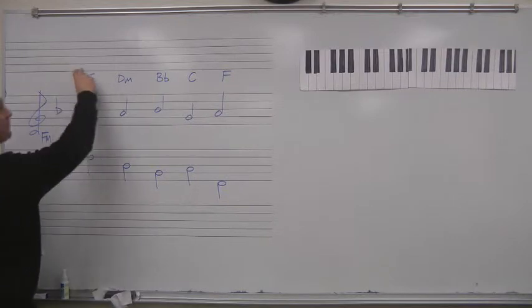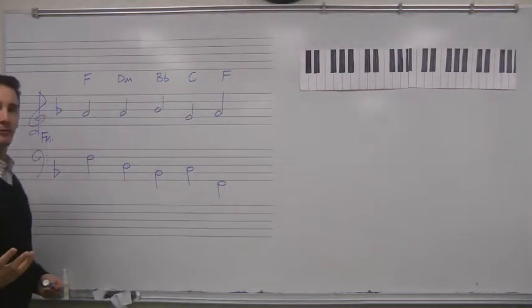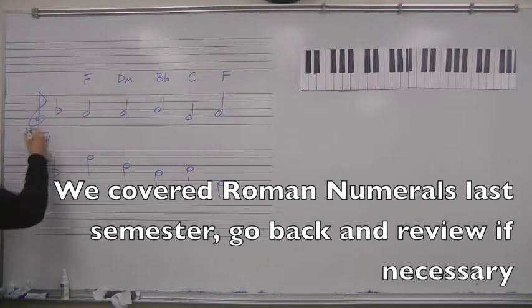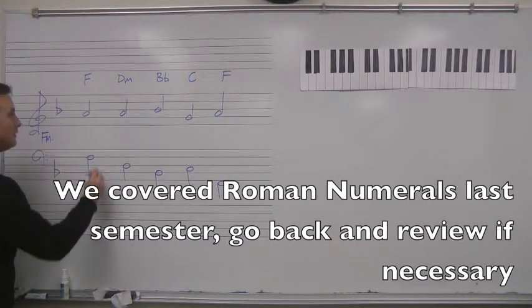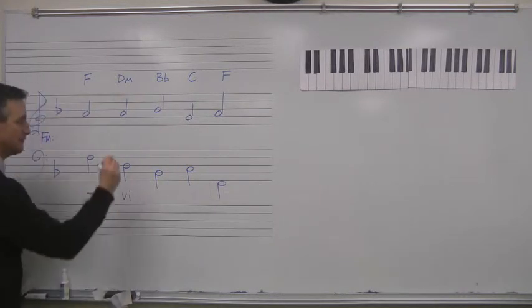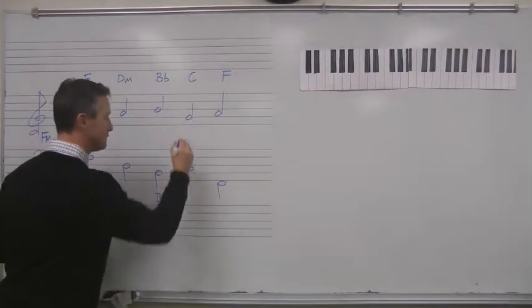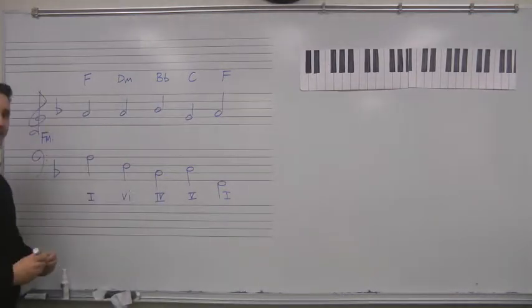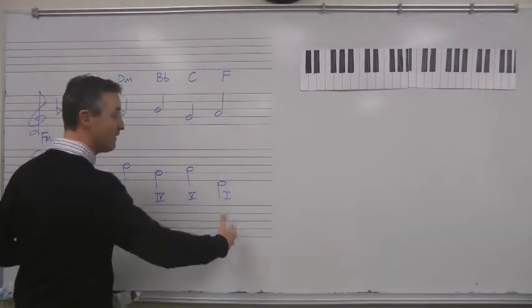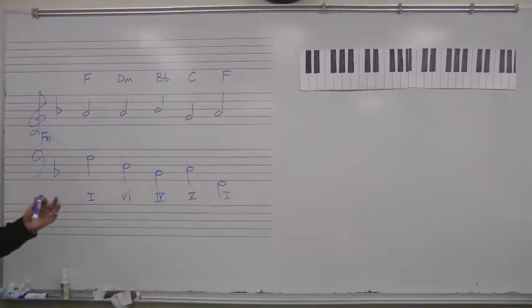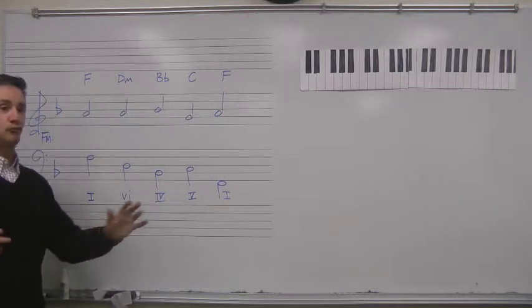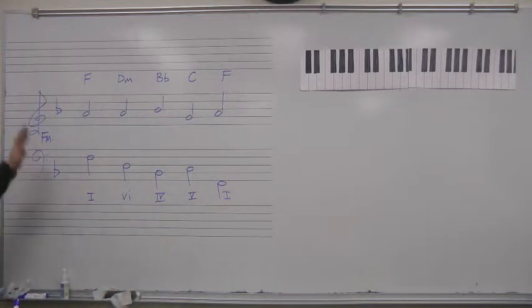If we wanted to take this progression and we wanted to turn it into Roman numerals so we could express it more generically, what would that be? Well, in this key of F major, F is going to be I. D minor is vi. B flat is IV. C is V. And we get back to F, I at the end. Makes sense. I, vi, IV, V, I. That's a very standard progression. There's nothing terribly tricky about that. We've encountered that last semester when we were talking about rock and pop music and the Beatles. This chord progression, a very solid chord progression.